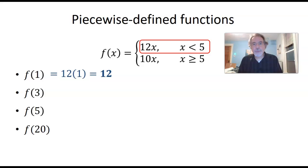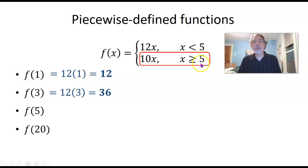What about f of 3? Well, 3 is also less than 5, so to calculate f of 3 we take 12 times 3 and we get 36. What about f of 5? Is 5 less than 5? No, it's greater than or equal to 5. So anytime the number we put in for X is a number that's greater than or equal to 5, what we do to it is we take 10 times that number. So 10 times 5 is 50.